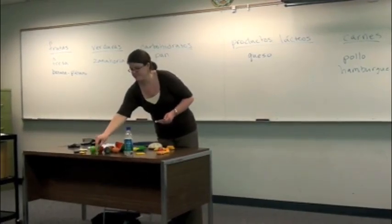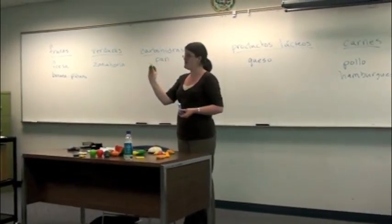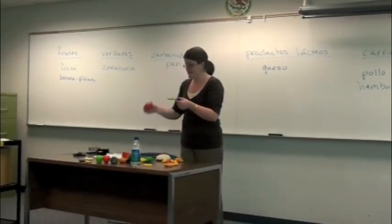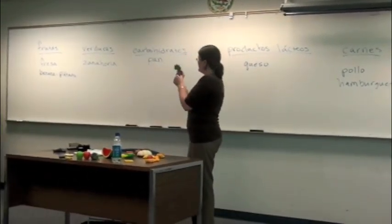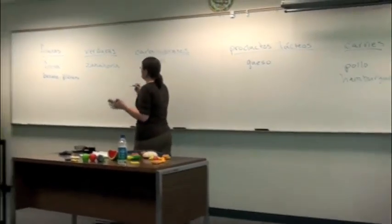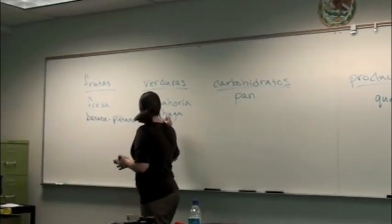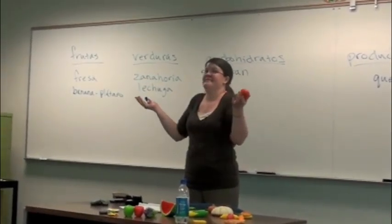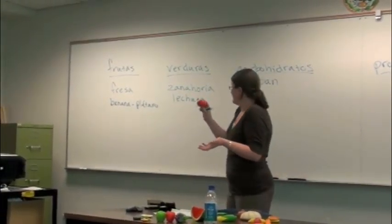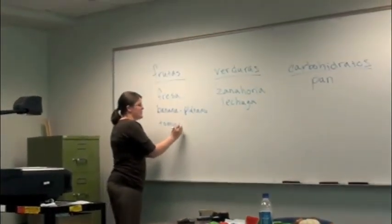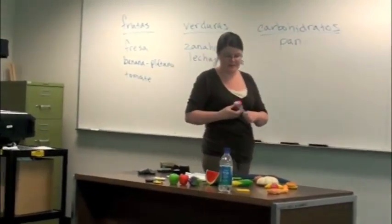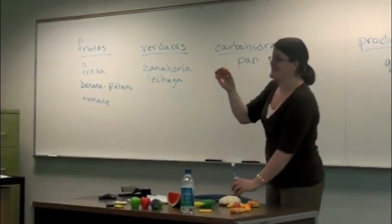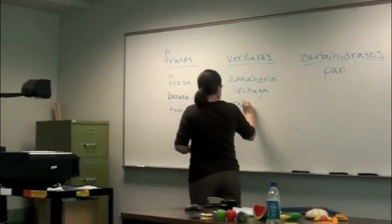Aquí tenemos lechuga, que es el ingrediente principal en la ensalada. A mí me gusta preparar ensalada de lechuga, de tomate, a veces con cebolla. ¿Y la lechuga es una fruta o una verdura? Una verdura. También me gusta el tomate. ¿Qué es? ¿Es una fruta o es una verdura? Técnicamente es una fruta, pero muchas personas piensan que es una verdura. Es una fruta roja. A mí me gusta comer ensalada con lechuga, tomate y cebolla. La cebolla es una verdura.